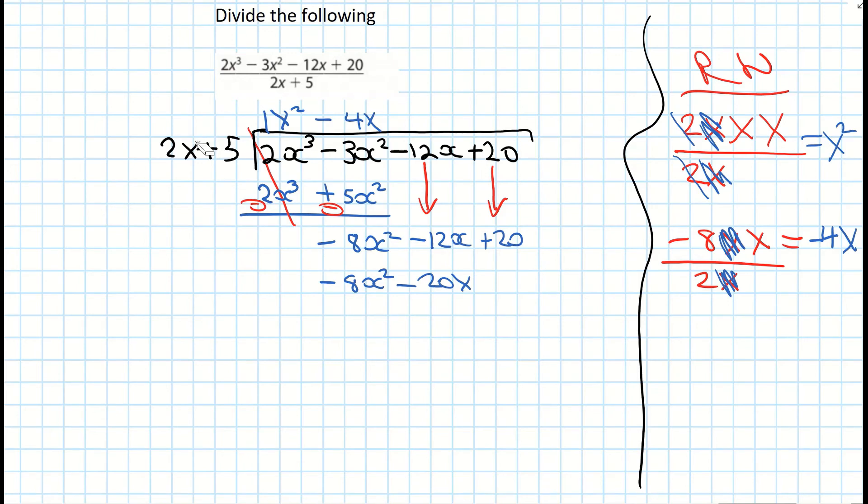So our next step now is to draw a line underneath and we want those x squareds to cancel out. The only way they'll cancel out is if they're different signs again. So one has to be a minus and one has to be a plus. So I need to change the bottom line there now to a plus. And the minus 20x also becomes a plus. I can cancel out the minus 8x squared plus 8x squared becomes 0. And then in your head or on your calculator minus 12x plus 20x becomes a positive 8x. I then bring down the plus 20.